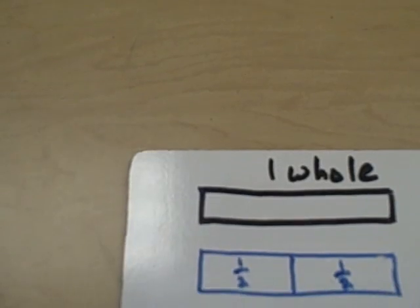Looking at each unit fraction, we can tell that one fourth is a little bit smaller than one third, which is a little bit smaller than one half, which is a lot smaller than one whole.